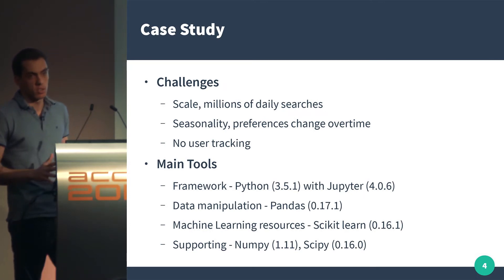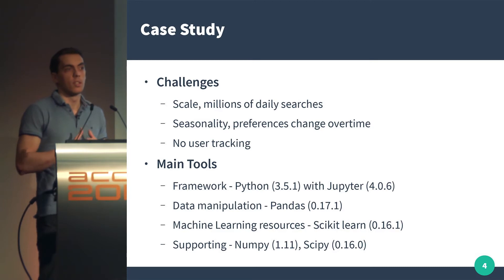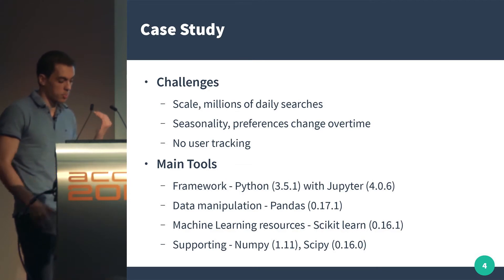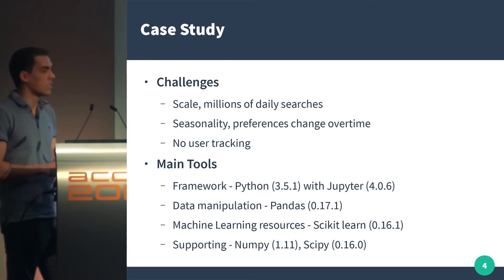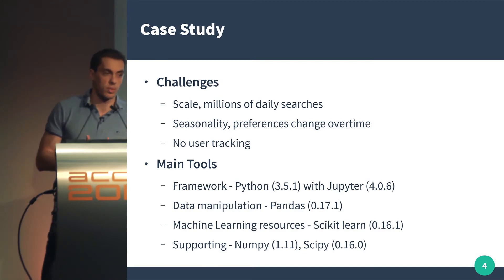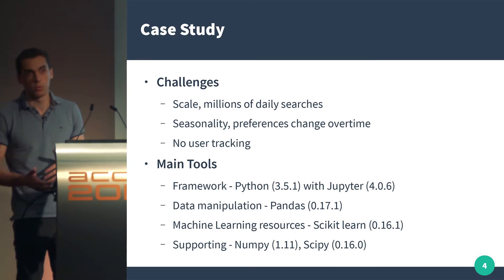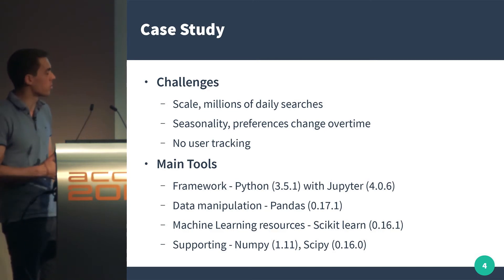Despite common challenges around data quality and transformations, for this task at hand we had three main challenges: the scale — we're talking about millions of searches; the seasonality bound to the travel agency, where people's holiday preferences can change not just yearly but sometimes due to a tragedy, like a terrorist attack in a destination, so we have to account for that.